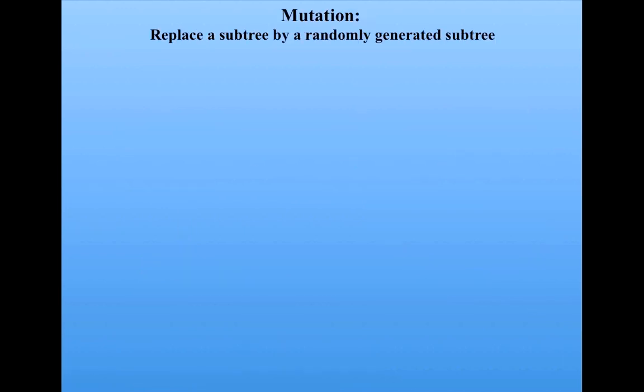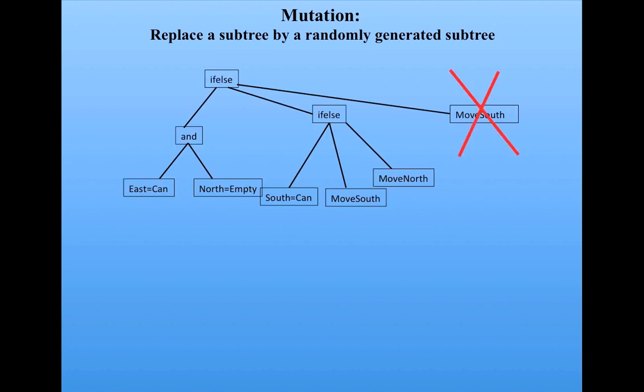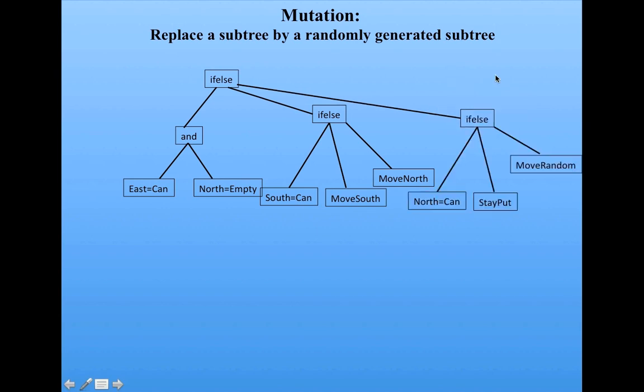Mutation, instead of replacing a randomly chosen value by another random value, replaces a subtree by a randomly generated subtree. I didn't implement a genetic programming version of Robby — that's something the more advanced programmers among you might be interested in doing. But I do want to tell you about two real genetic programming projects that are quite interesting.